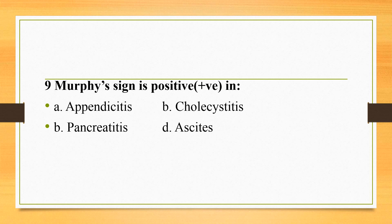The Murphy sign is positive in cholecystitis. In Murphy sign, there is hyperesthesia below the scapula. In appendicitis, there is McBurney sign. In pancreatitis, there is Cullen's sign. Ascites is the collection of fluid in the peritoneal cavity.